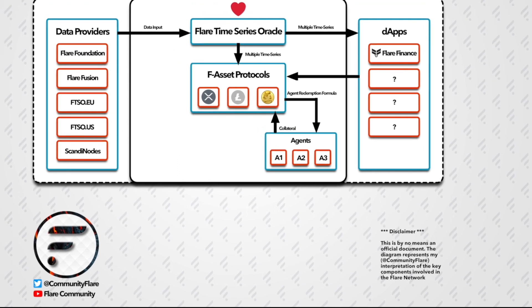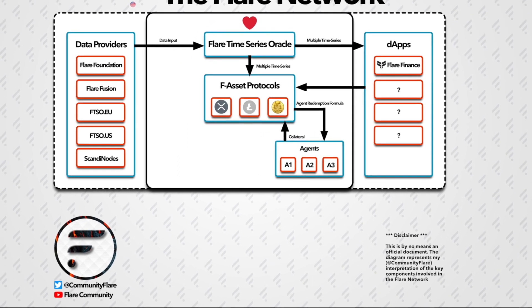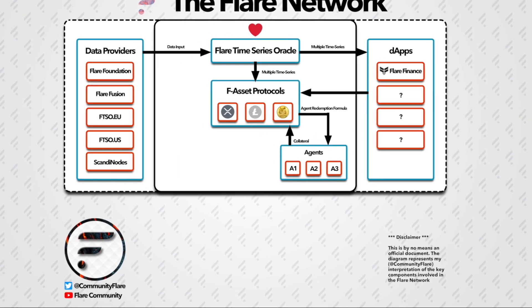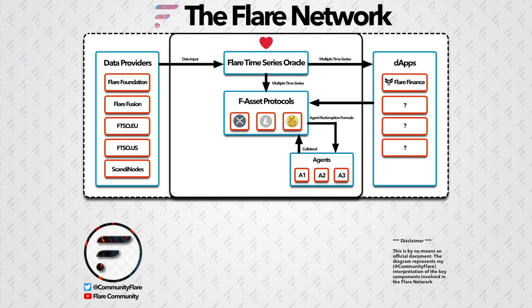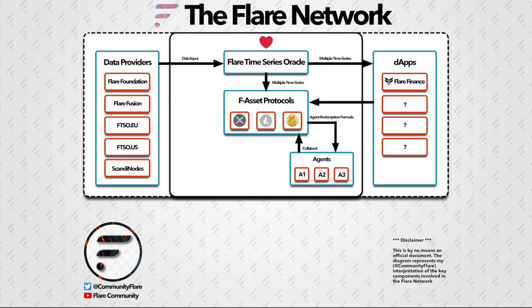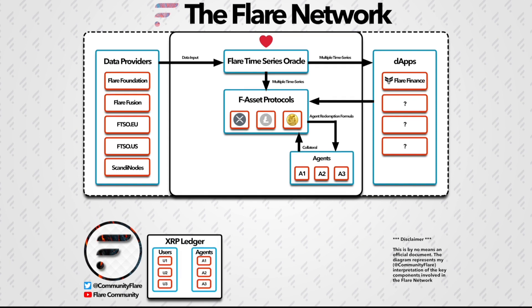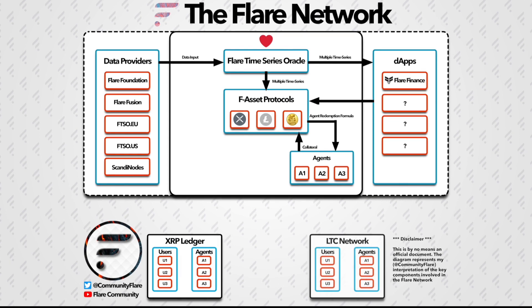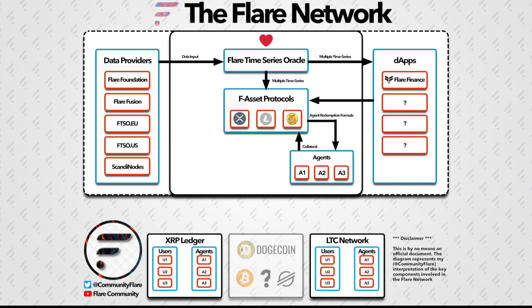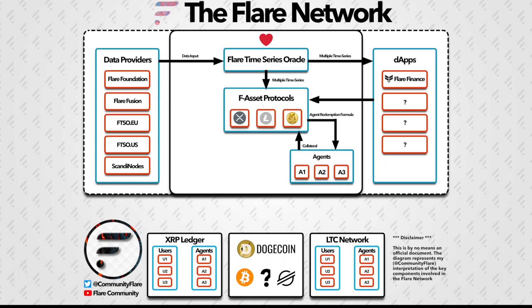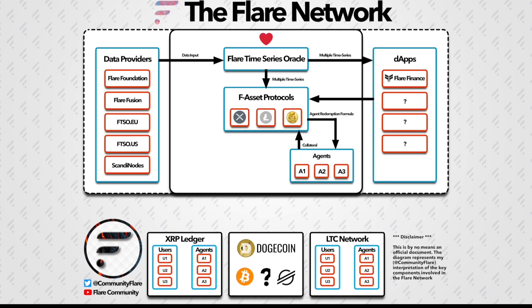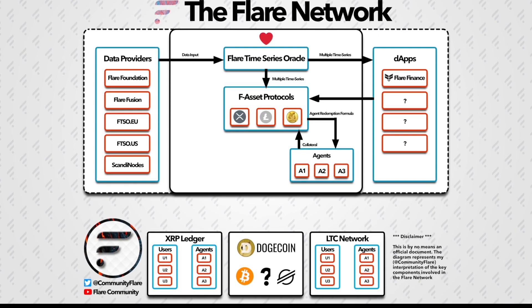Outside of the Flare Network, various blockchains or distributed ledgers exist. Some of them are compatible with the Flare Network and allow the asset to be converted into an F-asset. Currently, this includes XRP, Litecoin, and most recently Dogecoin. Who knows what the next asset will be?